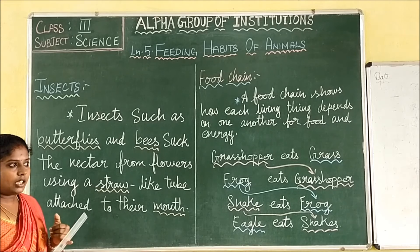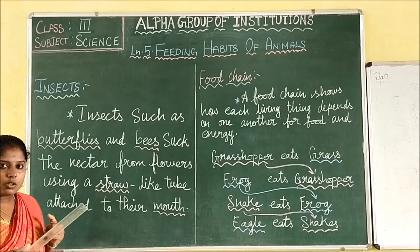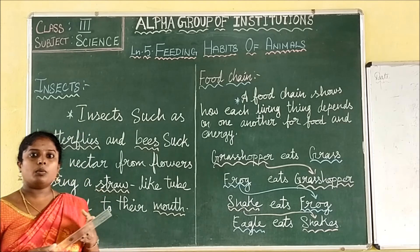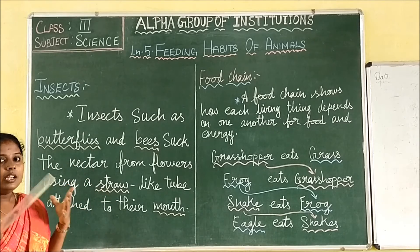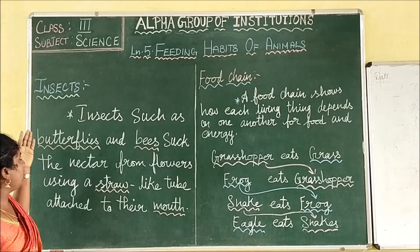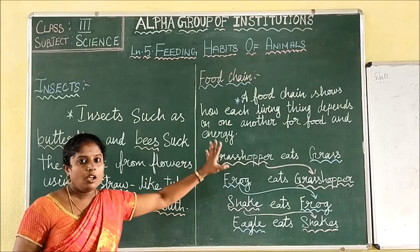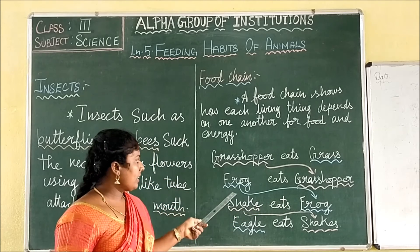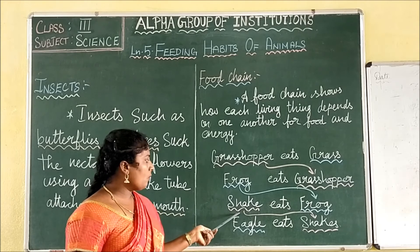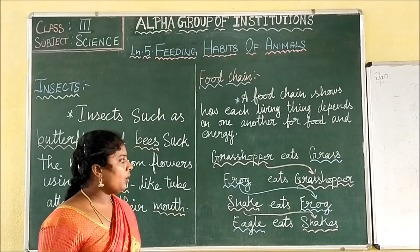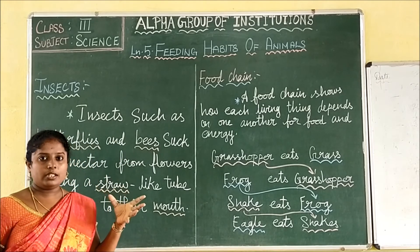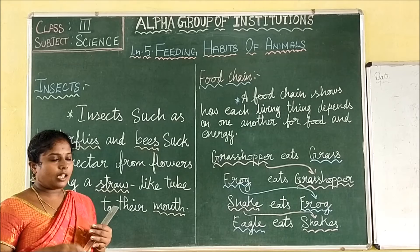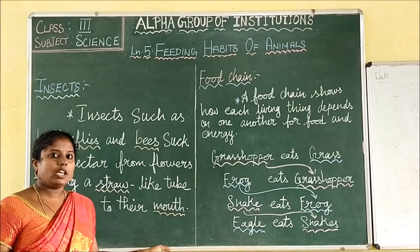So this is about the lesson on feeding habits of animals — starting with the classification of animals according to their food habits such as herbivores, carnivores, and omnivores. And then about how animals without beaks eat, and then about birds and their beaks, and then about insects. And it all combines together in the food chain — starting from grass, eaten by grasshopper, eaten by frog, eaten by snake, eaten by eagle. We will see some activities based on this.